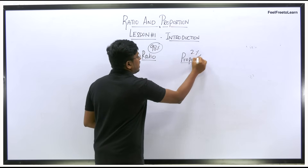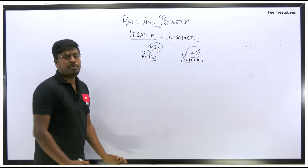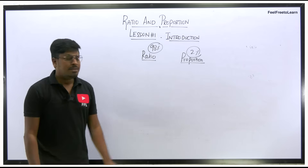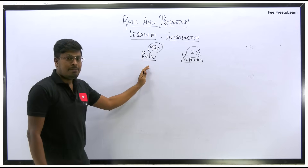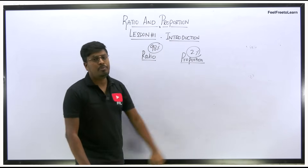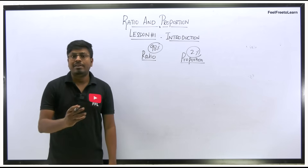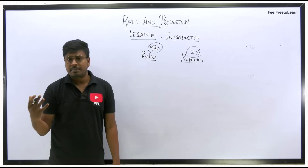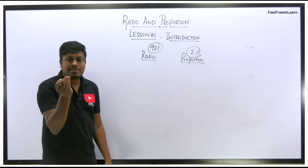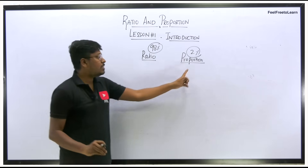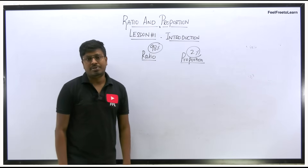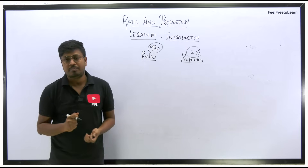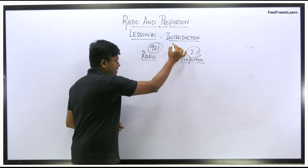Only about 2% of questions are on the concept of proportion, but you need to learn both concepts. Give importance to ratio, but you also need to know what proportion is. When you move on to more difficult questions — like in CAT exams or GATE exams — you can see small questions based on proportion. So try to learn both ratio and proportion.